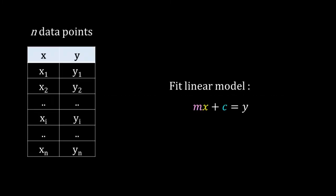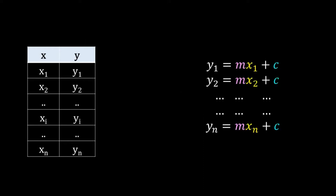We have n data points x1, y1 to xn, yn. We want to fit the equation of a straight line y = mx + c to this data. For each of the data points, we can write a linear equation: y1 = m·x1 + c, y2 = m·x2 + c and so on. So I have a system of linear equations with n equations.